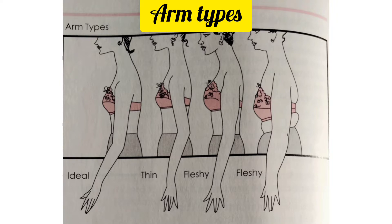Next up is the arm type. The first model has an ideal arm where the flesh and bone are in perfect harmony. The second model has a thin arm with bony appearance, prominent wrist, elbow, and shoulder bones. The third model has full arms with flesh starting to fall from the top of the arm. The fourth and last model has a fleshy arm with bone structure covered with flesh, and flesh has fallen from the top of the arm.